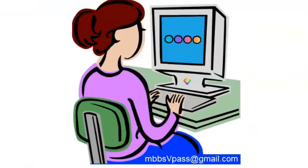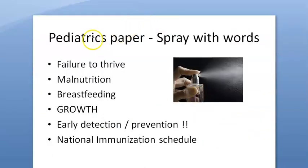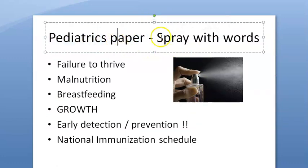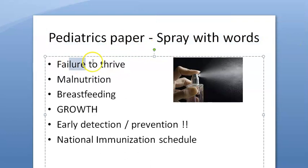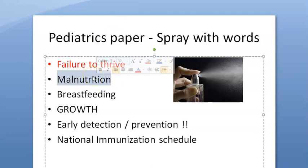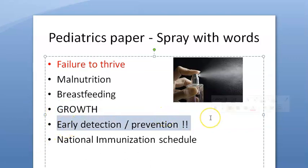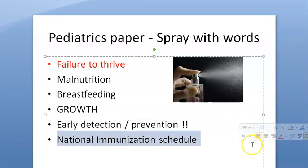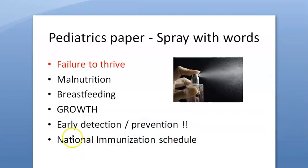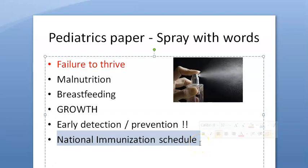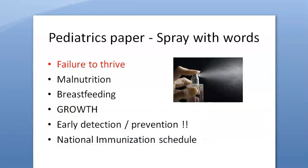For the pediatrics answer paper, use key phrases: failure to thrive, malnutrition as a major cause, breastfeeding as a solution, monitor growth and development (fine motor, gross motor, social, language). Emphasize early detection and prevention — especially for hypothyroidism and screening newborns for inborn errors of metabolism. Print the National Immunization Schedule in your brain and write 'prevention, early detection' everywhere.